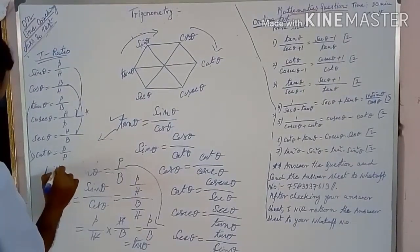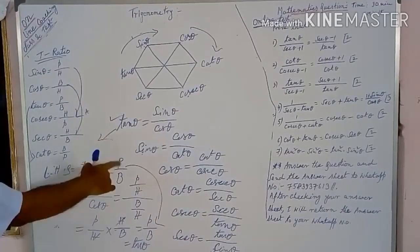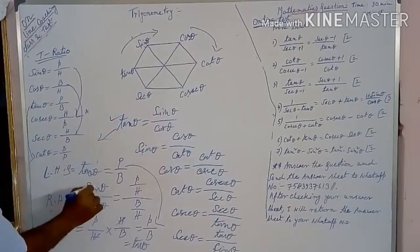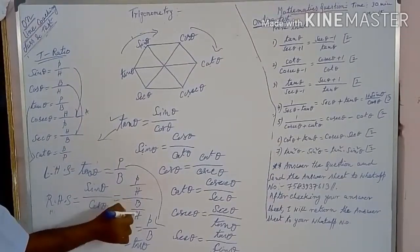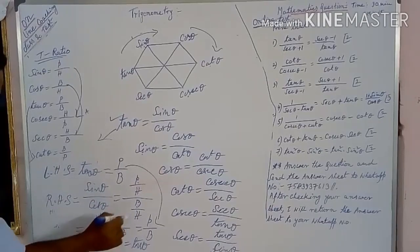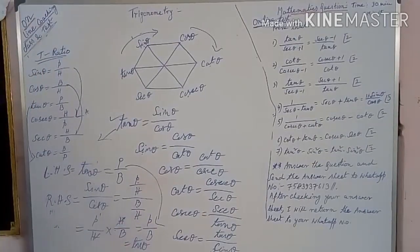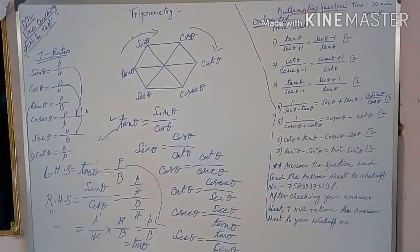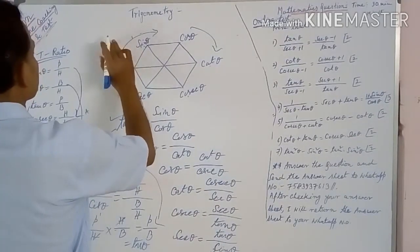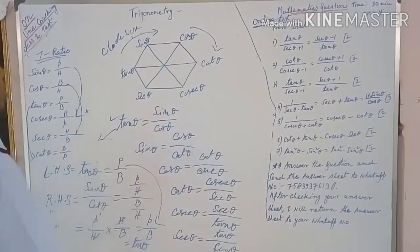The left hand side is tan theta, which equals perpendicular by base. The right hand side is sin theta by cos theta. Put the value of sin theta — sin theta is equal to P by H — and the value of cos theta is B by H. So P by H divided by B by H gives P by H multiplied by H by B. H and H cancel out, giving P by B — that is perpendicular by base — which is equal to tan theta. You can prove the rest of the formulas in this way. It's a very easy method — just move in the clockwise direction.